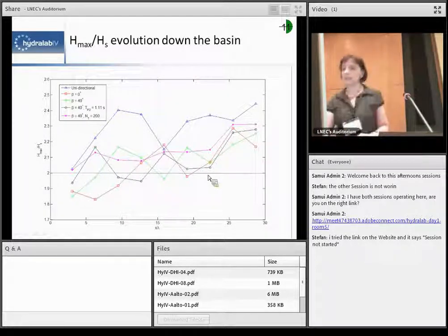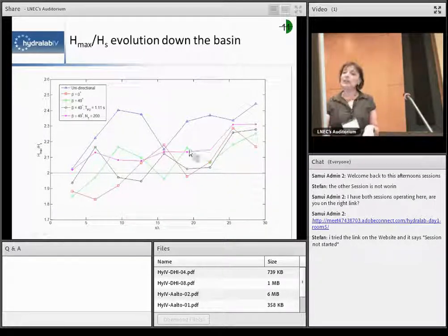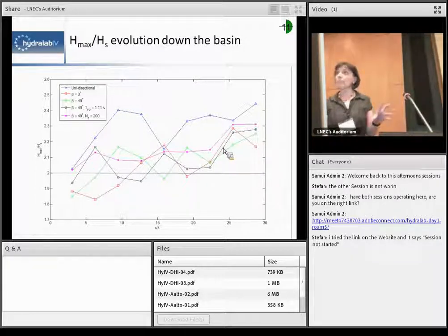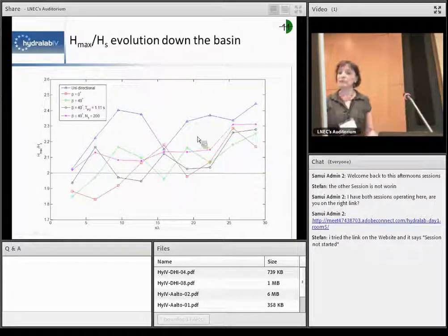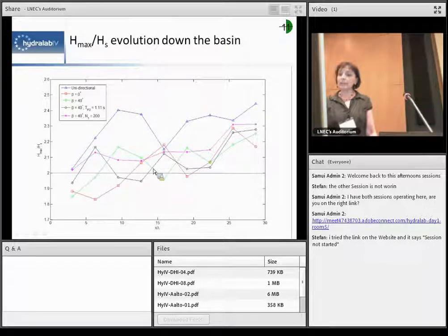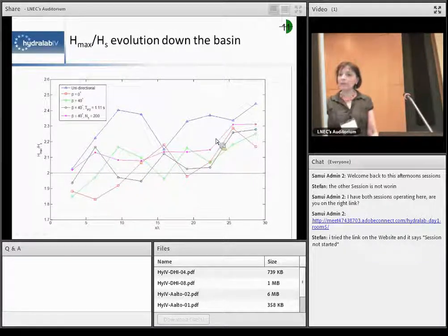Most of them actually unidirectional, that's kind of already found before. And the other kind of things here is that we follow really nicely that in multidirectional cases, they are coming towards the end of the basin. So further away from the paddles, which is also theoretical, that takes some time to develop those.